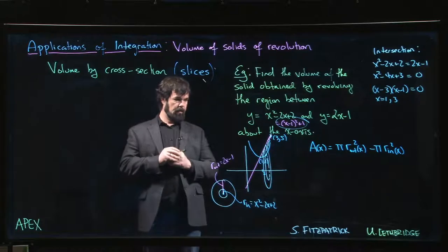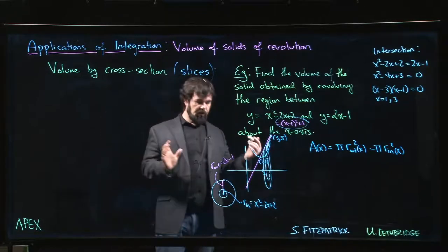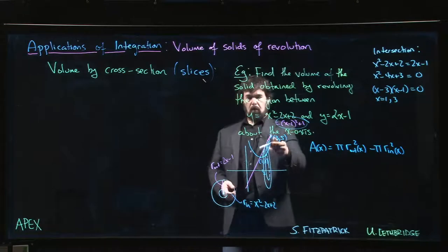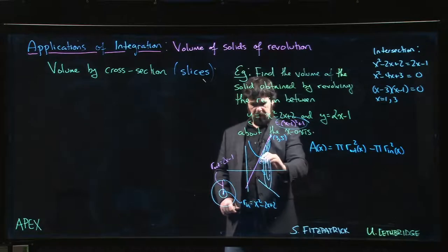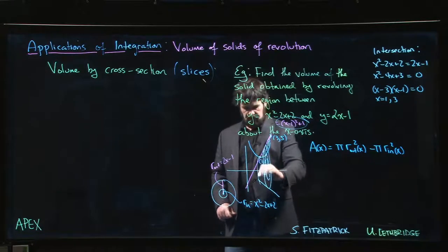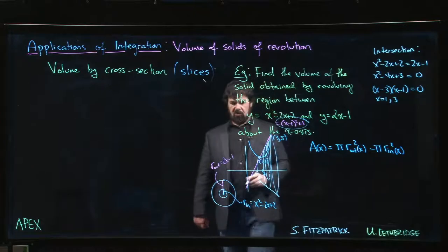Okay, so in the previous video we set up this problem and we went through the work. Now, rather than simply using a disc, which is what we want when we have a single curve, if we're revolving that outer red curve we would get this sort of cone shape region.